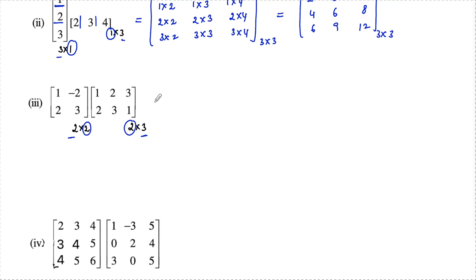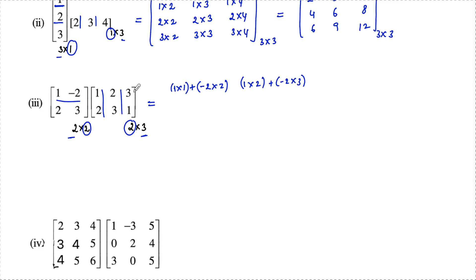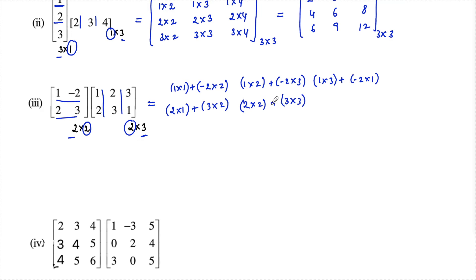We will get 6 elements. First row with first column: 1 into 1 plus negative 2 into 2. First row with second column: 1 into 2 plus negative 2 into 3. First row with third column: 1 into 3 plus negative 2 into 1. Second row with first column: 2 into 1 plus 3 into 2. Second row with second column: 2 into 2 plus 3 into 3. Second row with third column: 2 into 3 plus 3 into 1.